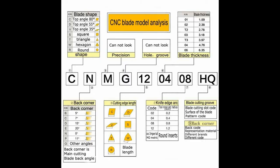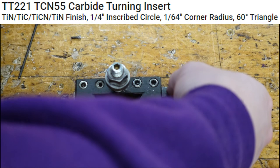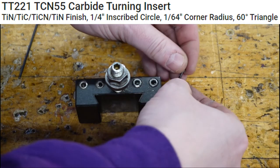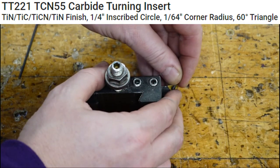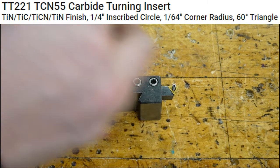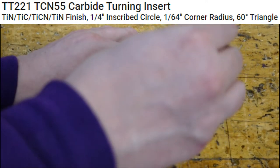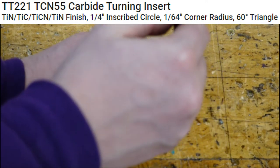There are many types of bits down there, all broken down by code. For our shop we use this TT221 TCN55 carbide turning insert. The nice thing about this bit is it has three different edges, so if one edge is broken you can flip it around and use another one. When all three edges are damaged, replace the tool.